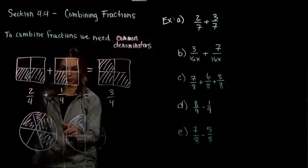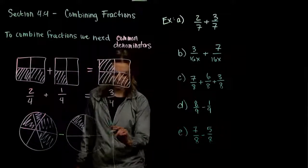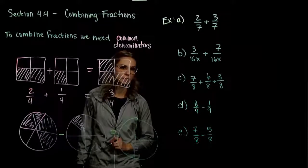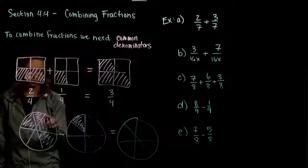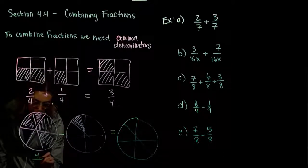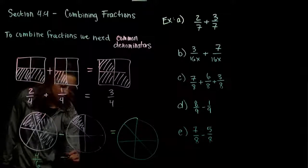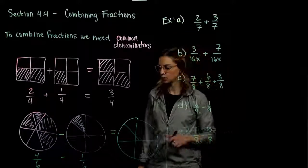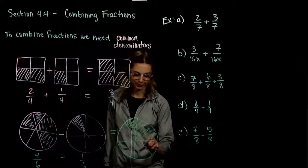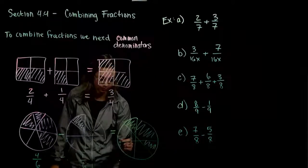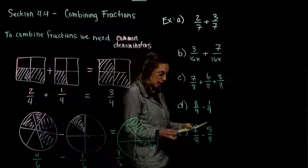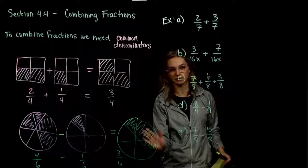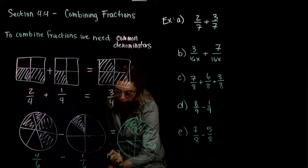Instead of combining with addition, let's combine with subtraction. If I take the first shape's shaded region and subtract off what's in the second, we're still going to create the same unit shape divided into the same number of pieces. I had four out of a total of six in the first shape, and I'm removing one out of that six. So how many are we going to have left? Three out of six, which we can reduce — three-sixths reduces down to one half.